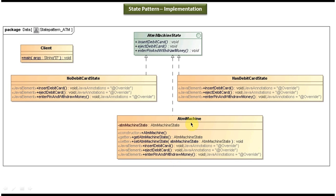The ATM machine maintains the internal state. Once you insert the debit card, the ATM machine internal state will change to 'has debit card' state. Once you eject the debit card, the ATM machine internal state will change back to 'no debit card' state. That kind of logic will be written inside the ATM machine's insert, eject, and enter pin methods. There is also a client class with a main method used to demonstrate this state design pattern. I will open Eclipse and show you the code.